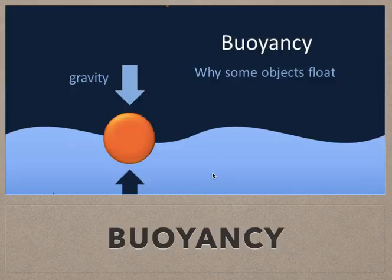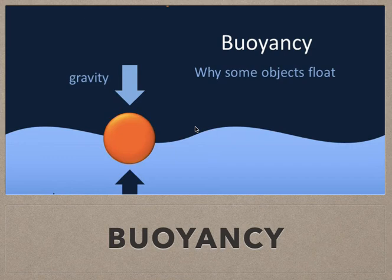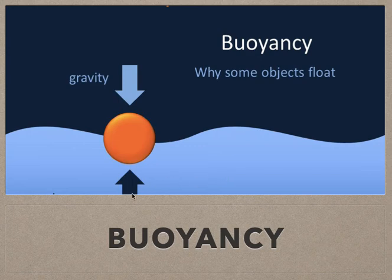To understand this we need to understand buoyancy. What is buoyancy? When we put any object on water, gravity pulls that object downwards. When gravity pulls that object downwards, that object displaces some water. Then the displaced water rises up, and water exerts some upward force. That upward force is called buoyant force or buoyancy.